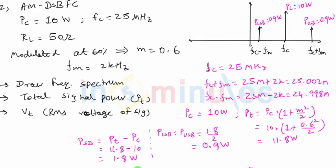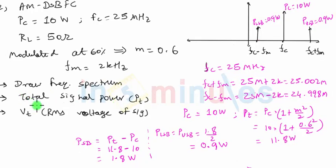Let's proceed to the next question. We need to find the total signal power PT, which we have already done. We got the value of PT as 11.8 watts. We now have to find VT, which is the RMS voltage of the signal.